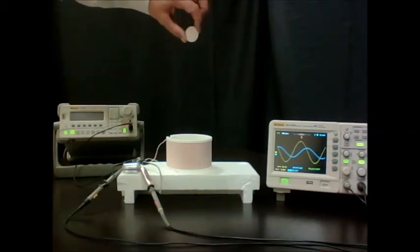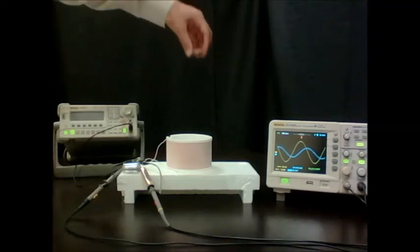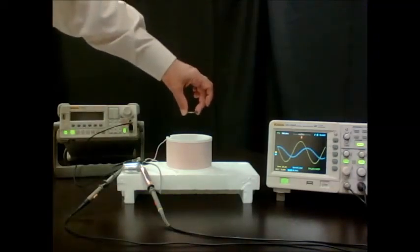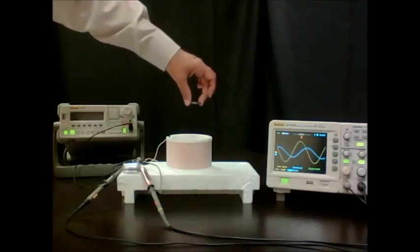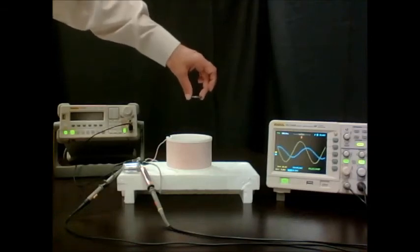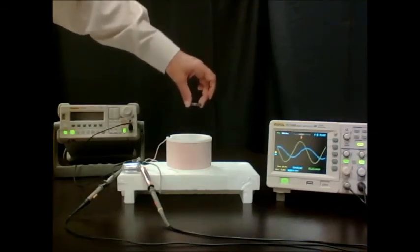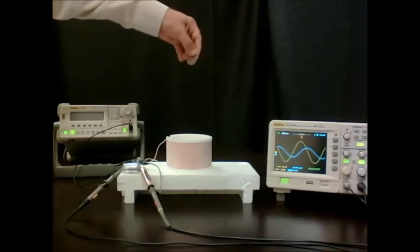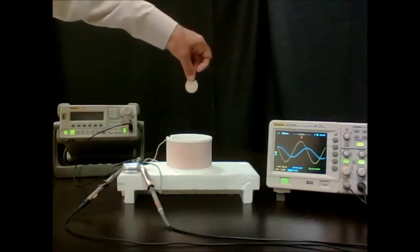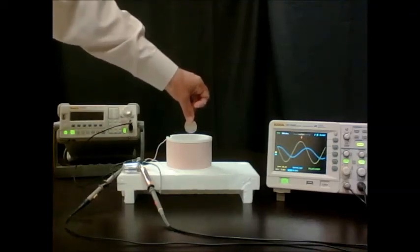This is a standard coil. I bring it close to the detector. You see that there is a shift, even if the object is quite small. If the coil is vertical, the shift is still there, but smaller.